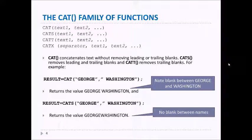Here are a couple examples. Here is RESULT equals CAT of "GEORGE" comma " WASHINGTON". Notice that it returns GEORGE and then the space in WASHINGTON because there's a space before WASHINGTON in the CAT function. Notice the space between the quote and the W.